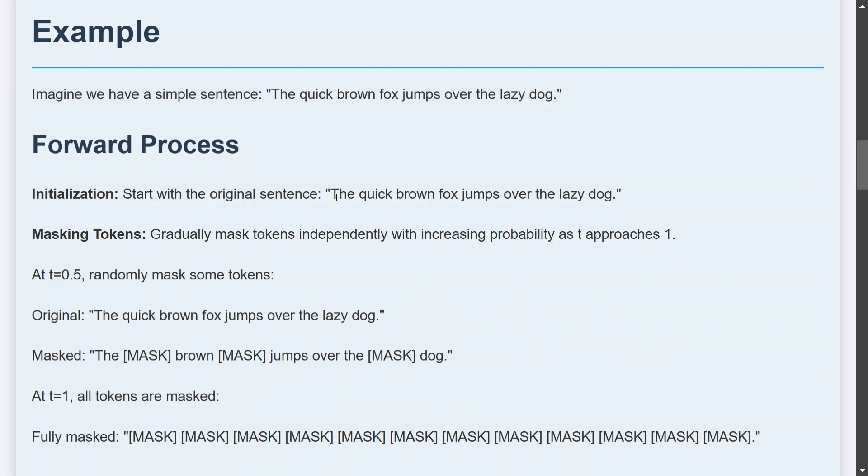The quick brown fox jumps over the lazy dog. First of all, we would be starting with masking tokens independently with the probability as t. At t=0.1, this is the time, random mask some tokens.